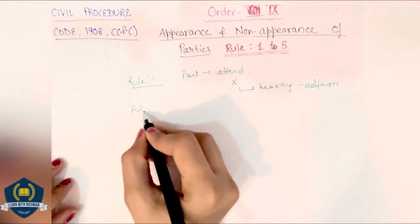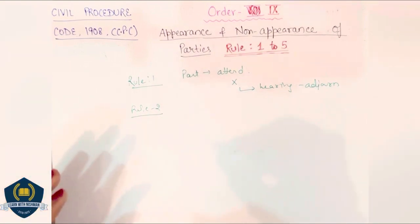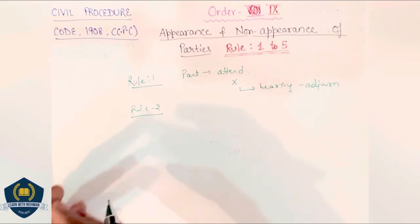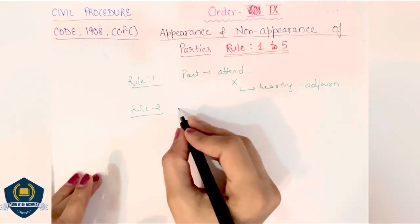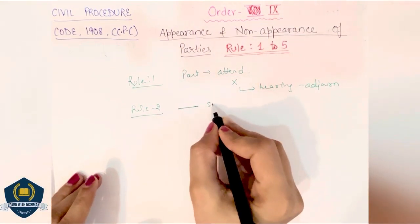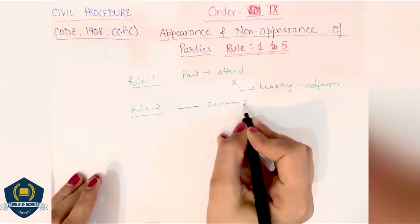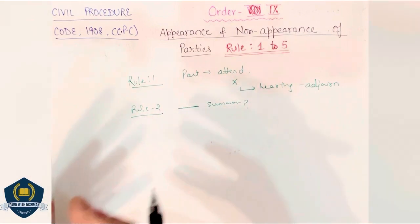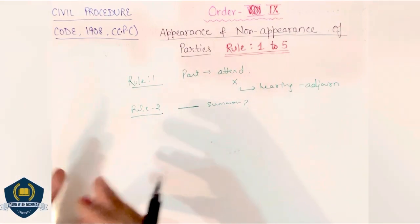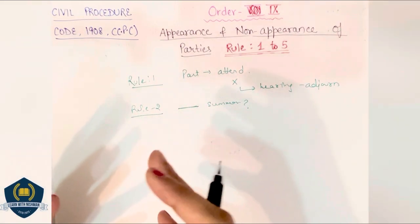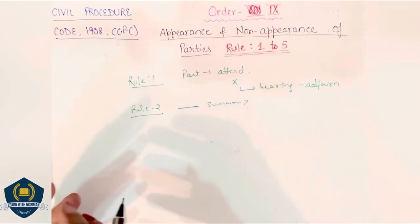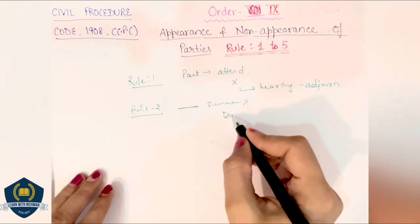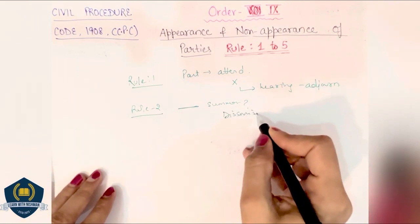Coming to Rule 2. Rule 2 talks about when on the date so fixed, summons has not been served. By chance कोई date fix कर दिये through court और तब तक जो समन है वो parties तक पहुँचे ही नहीं है। समन नहीं पहुँचे किसलिए? Because plaintiff has not paid the postal charges, या उसने कोई court charges नहीं pay किए हैं, and if he had not followed Order 7 properly, then court will dismiss the suit।